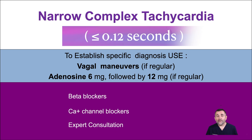If the rhythm converts with adenosine, it's most likely re-entry narrow complex tachycardia. Monitor for re-occurrence and treat re-occurrence with adenosine or a longer-acting beta blocker or calcium channel blocker. Expert consultation is advised. Do not use adenosine for unstable or for irregular polymorphic wide complex tachycardias, because it may cause degeneration into ventricular fibrillation.